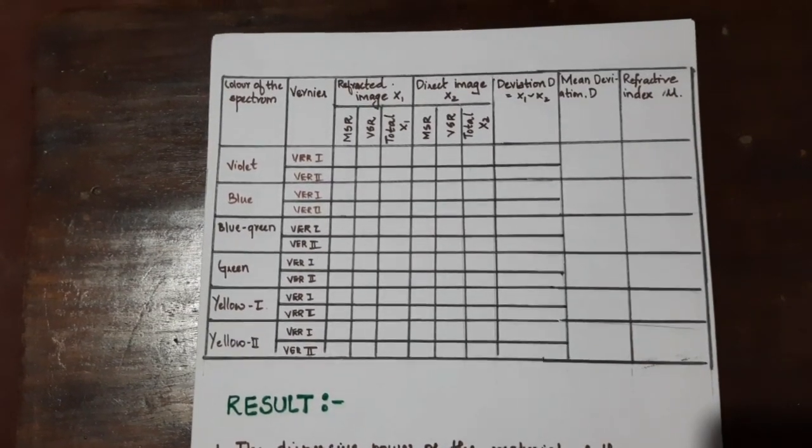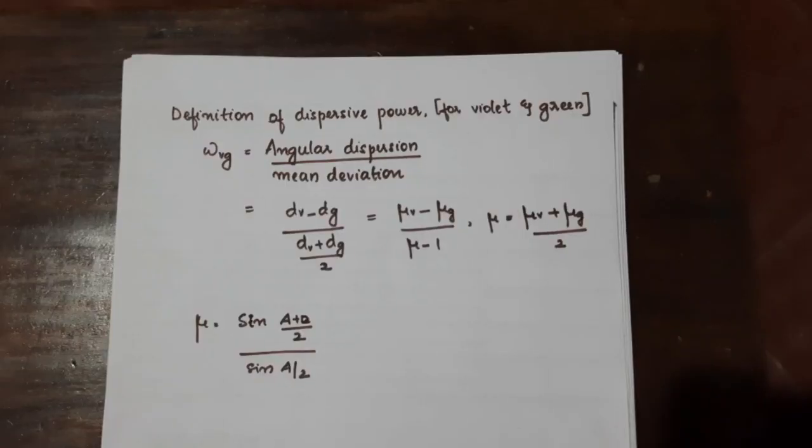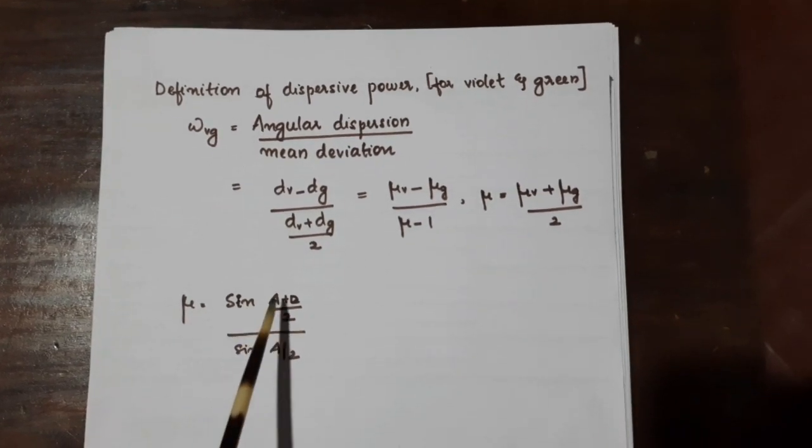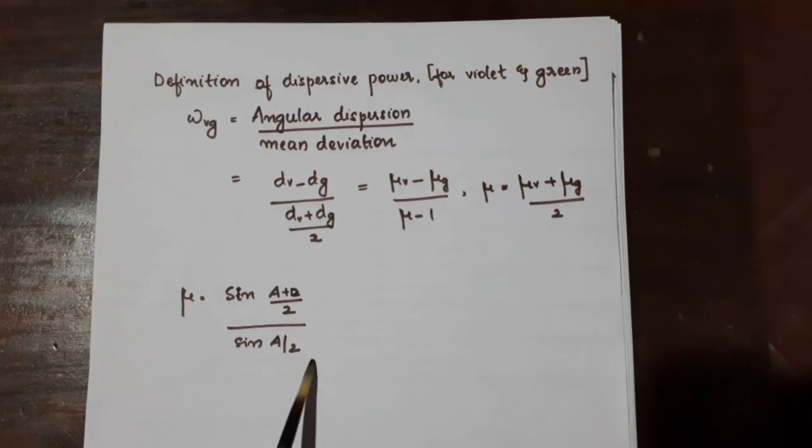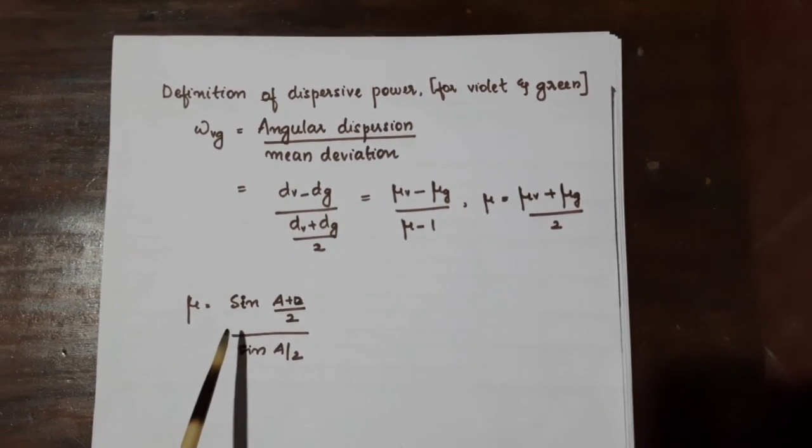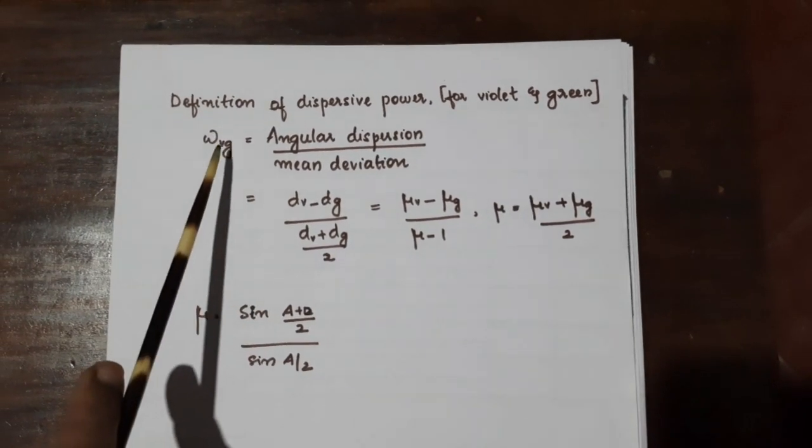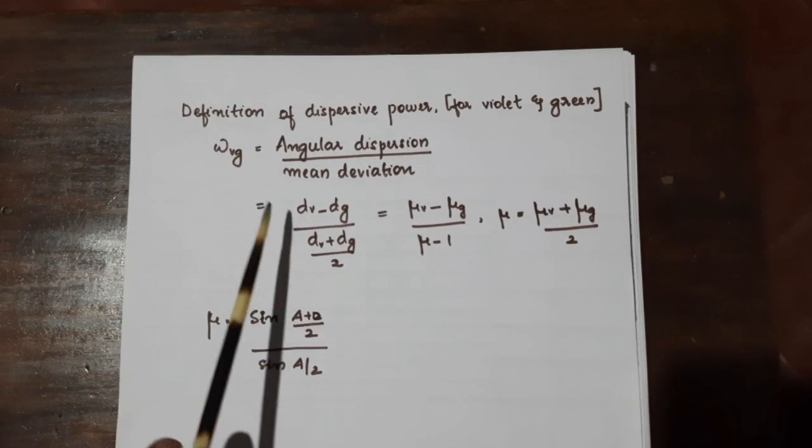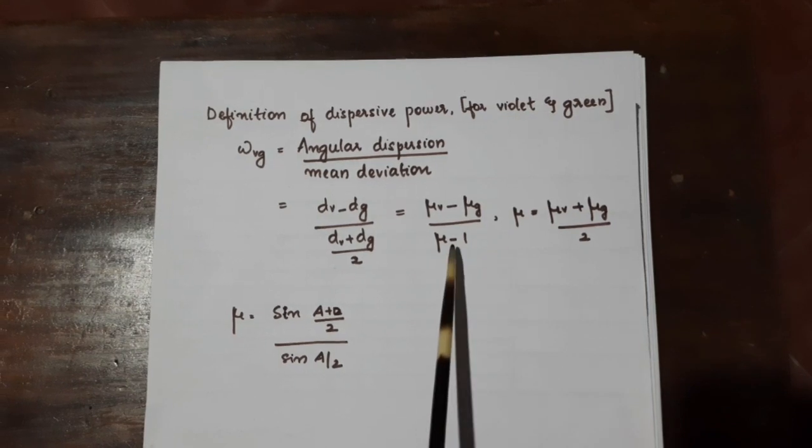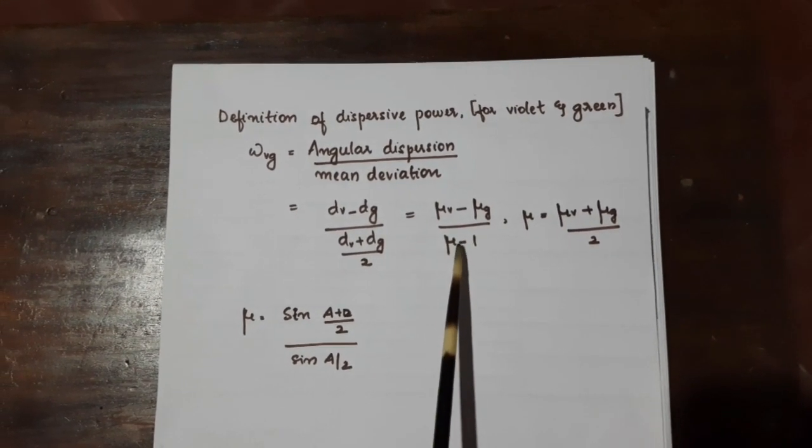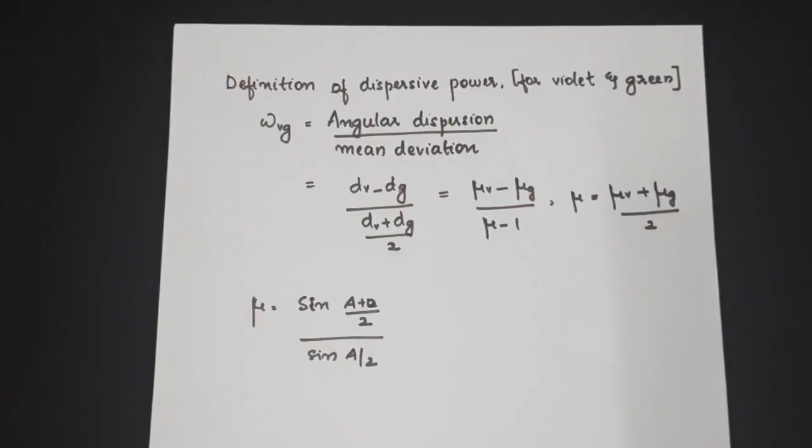Once D is known, you can calculate your refractive index. With the help of this equation, mu is equal to sin A plus D by 2 by sin A by 2. Once the mu for various colors are found out, then we can find out the dispersive power omega VG for the violet green combination as mu V minus mu G by mu minus 1 where mu is the average of mu V and mu G. This calculation for dispersive power can be repeated for various combinations of colors.